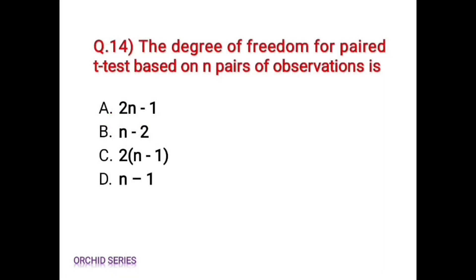Question 14: the degree of freedom for paired t-test based on n pairs of observation is — Option A, n-1. Option B, n-2. Option C, 2 into n-1. Option D, n-1.